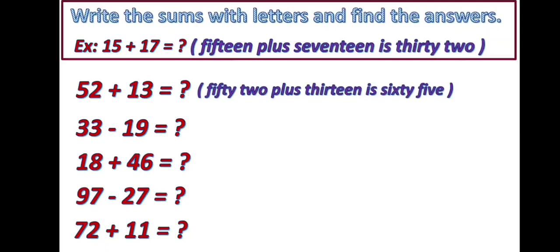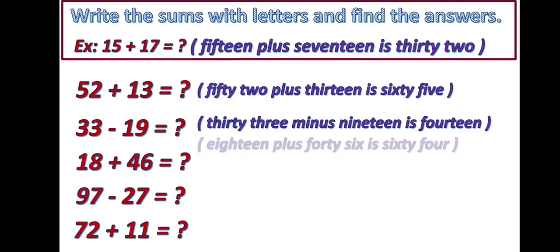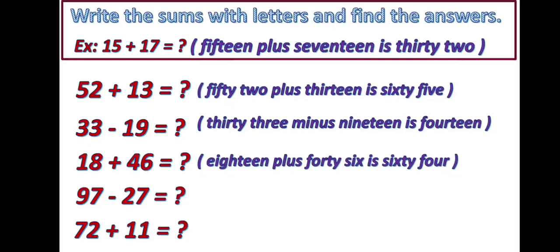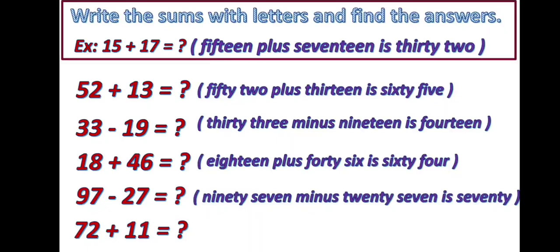Sixty-two. Thirteen. Thirty-three. Nineteen. Fourteen. Eighteen plus forty-six is sixty-four. Ninety-seven minus twenty-seven is seventy. Seventy-two plus eleven is eighty-three.